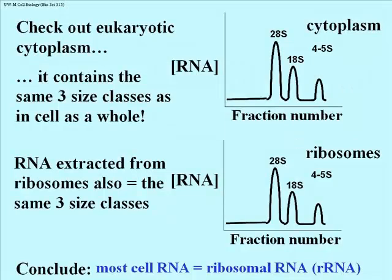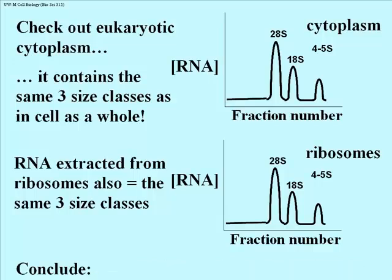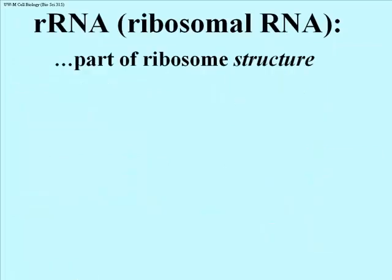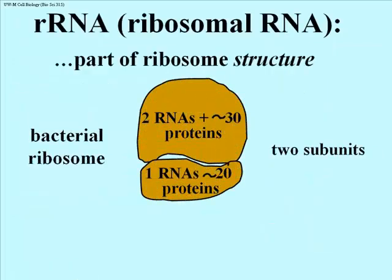Ribosomal RNA is part of the ribosome structure — the protein-making machine of the cell. There are two subunits, a large one and a small one. In bacteria, the large subunit is made of two ribosomal RNAs and about 30 proteins, while the small subunit is made of one RNA and about 20 proteins. Eukaryotic ribosomes are a bit larger and have a few more proteins and one more RNA altogether.